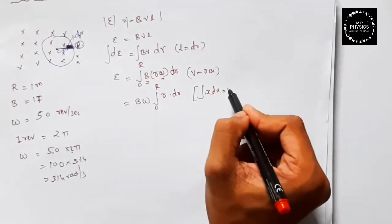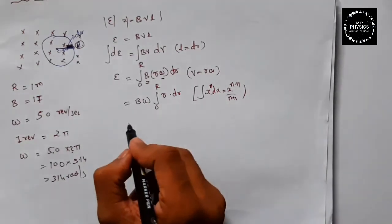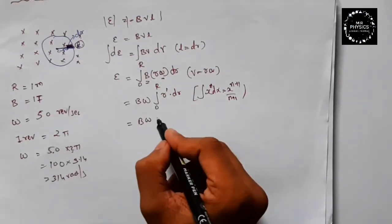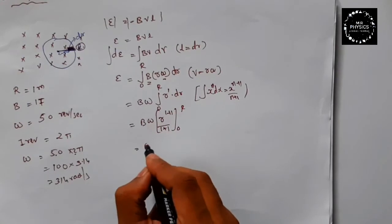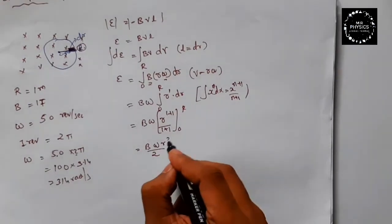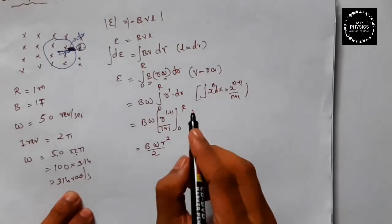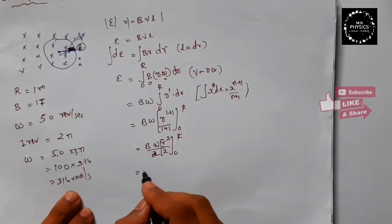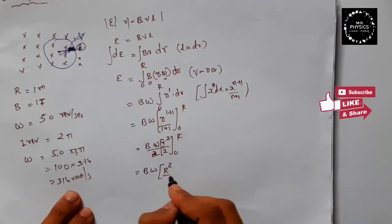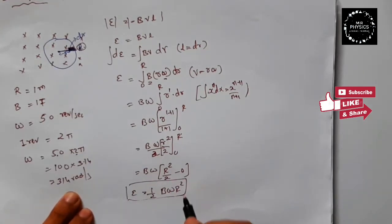Integrating r dr: using ∫xⁿ dx = xⁿ⁺¹/(n+1), here n=1, so we get r²/2. Applying limits from 0 to r: B·ω · [r²/2 − 0] = ½ B·ω·r². This formula, epsilon = ½ B·ω·r², is the standard result. You can use this directly next time.